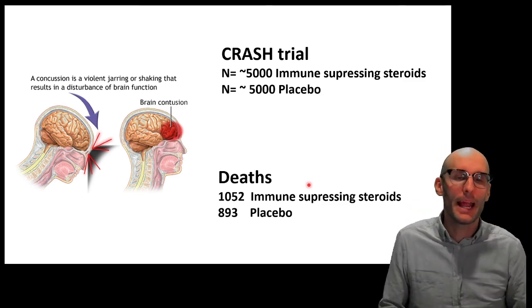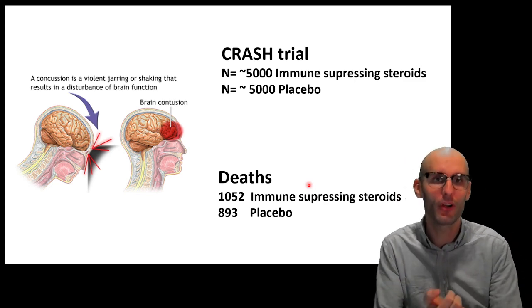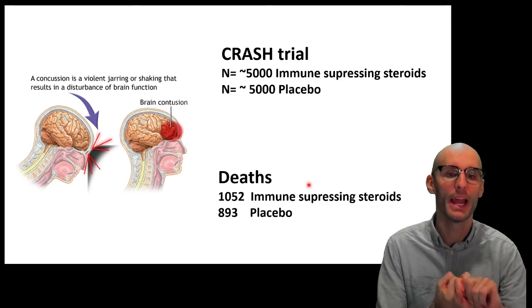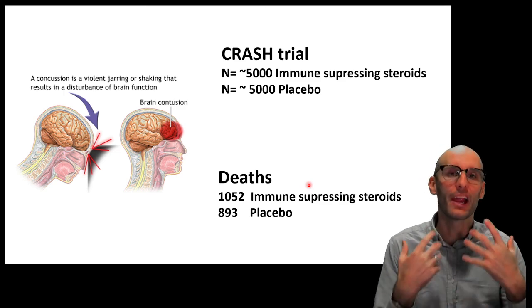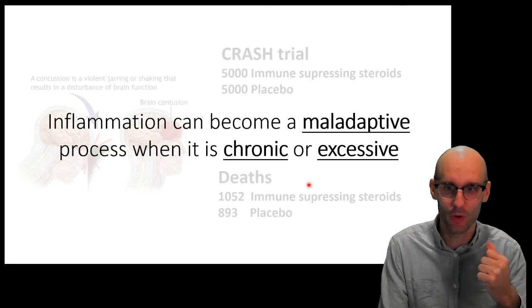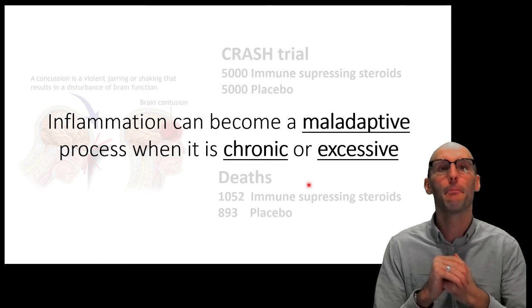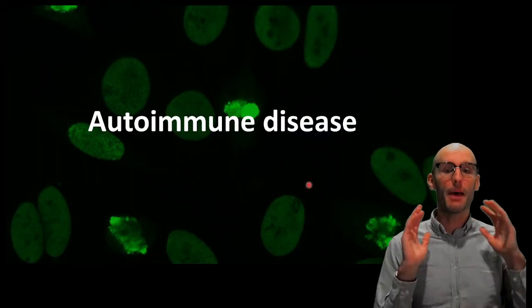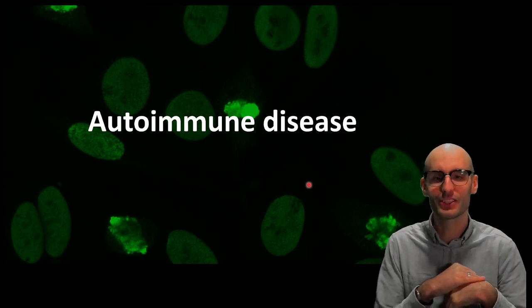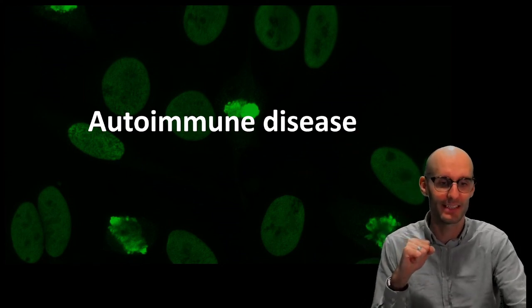That's because inflammation is normally good — it's normally not excessive and not chronic; it's normally there to deal with tissue damage, so it is normally a beneficial response. It's only when we get that excessive and chronic situation that inflammation causes more harm than it solves. So the key point is: inflammation can become maladaptive when it is chronic or excessive, but typically it is not. Up next, I'm going to cover another video about how the immune system can go wrong — touching on autoimmune diseases, which are a very interesting set of diseases. Thanks, guys.